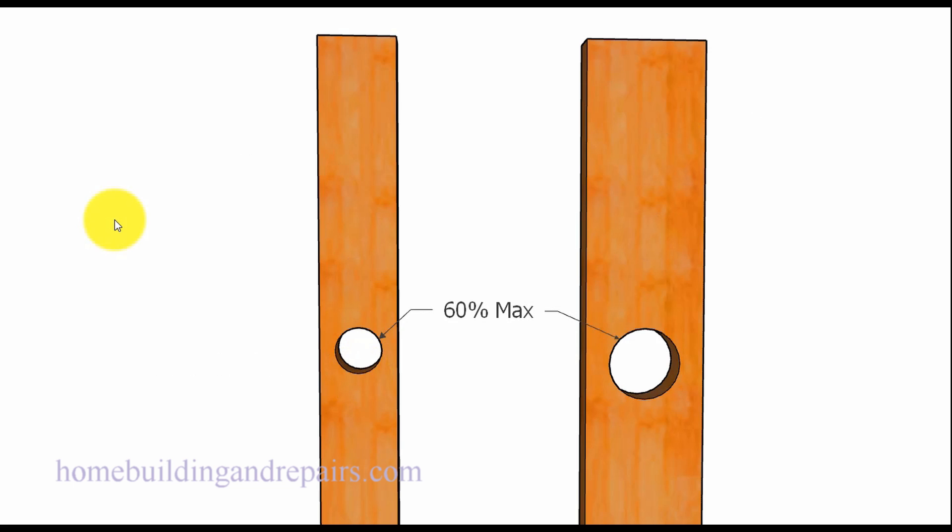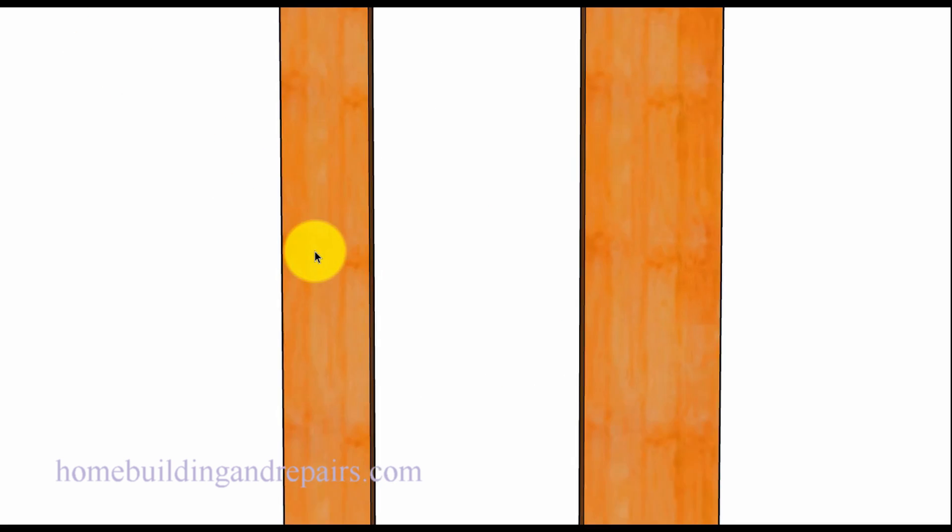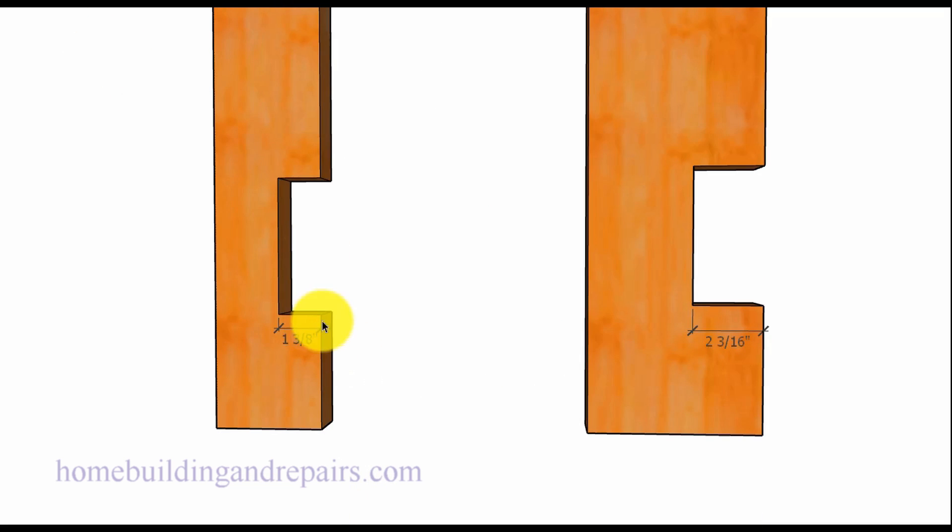Now let's take a look at non load bearing walls. 60 percent maximum diameter and the wall framing studs do not need to be doubled, and the notches can be a little larger. 40 percent of the wall framing stud thickness. So 2x4 looks like we got one and 3/8. A 2x6 about two and a quarter inches, a little under two and a quarter inches.